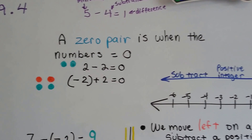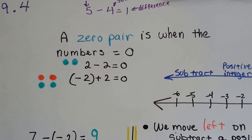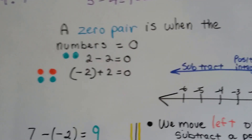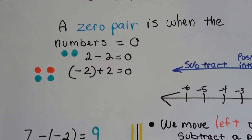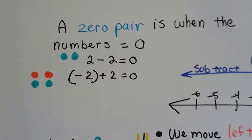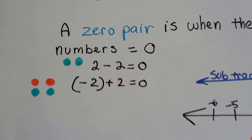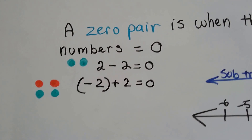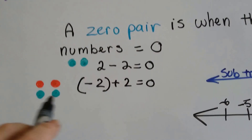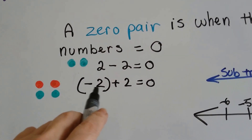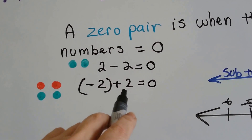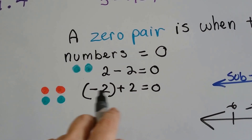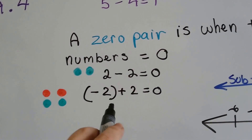I want you to remember from the previous videos what a zero pair is. When the numbers equal zero — if I have two and I take two away, that makes a zero pair. If I have a negative two and I add two to it, that's going to bring me to zero, so they're a zero pair.